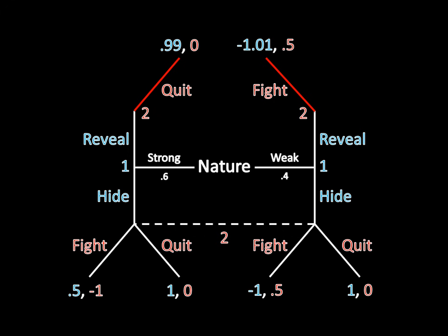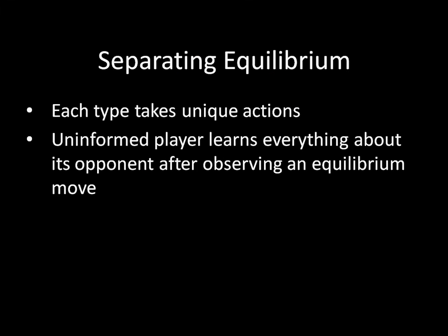Now we can get to the actual signaling part of this game. We're going to be looking for separating equilibrium, as the title of this lecture has indicated. And a separating equilibrium involves the following: each type is going to take a unique set of actions.